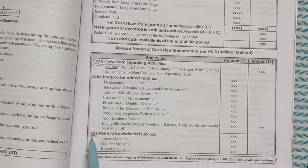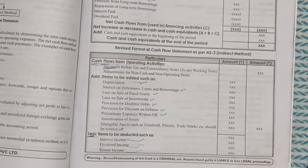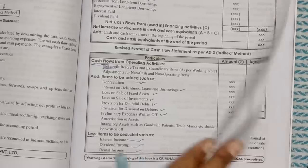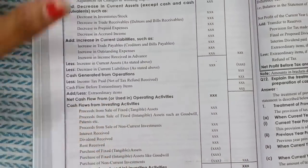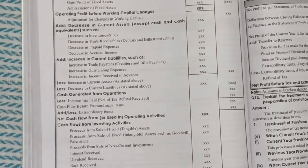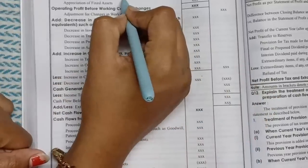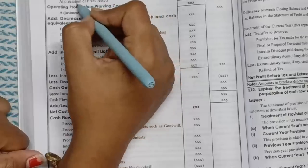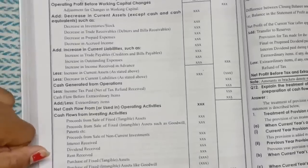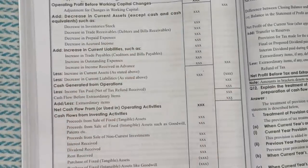Next, the items you need to deduct: interest received, dividends received, rental income — whatever profits we are receiving, we need to deduct those. Whatever losses we are getting, we need to add them. Also, profit or gain on sale of fixed assets — if you are getting a profit on fixed assets, you need to minus it. Appreciation of fixed assets — minus. Then you will get operating profit before working capital changes.